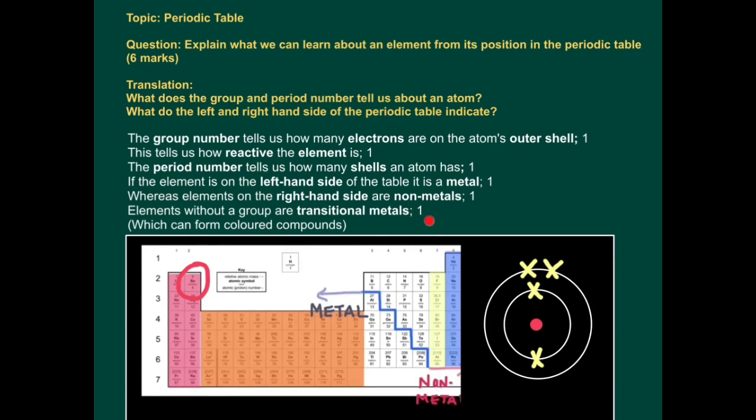Elements without a group are transitional metals. So here, all these elements here, they don't have a group number. They're called transitional metals and they can form coloured compounds. We can learn all this from just the periodic table alone.